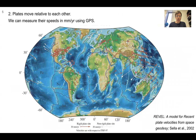Plates move relative to each other. This map of plate motions is derived from space geodesy, like GPS — the way your smartphone knows your location. Here we can see that plates are moving. We don't even need geological information to see this.